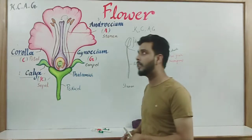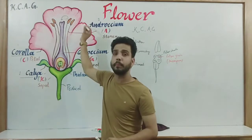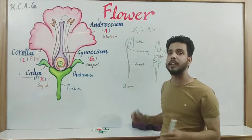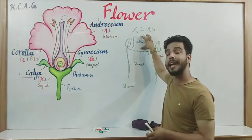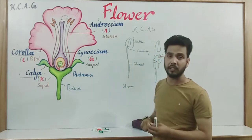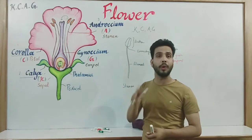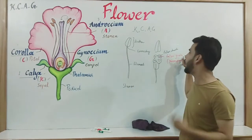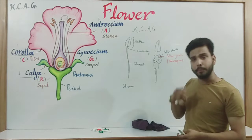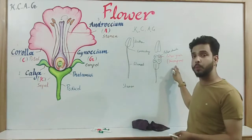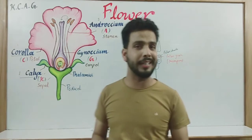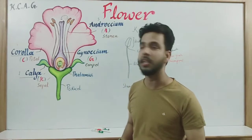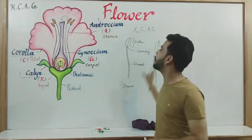So, anther is the male part. A single unit of androecium is known as stamen. There are 3 parts in a stamen: anther, filament, and connective. The anther is divided into two anther lobes, inside which pollen grains are present and formed inside the pollen chambers. Pollen grains are also known as microspores, and the process by which microspores are produced inside the flower is termed as microsporogenesis.